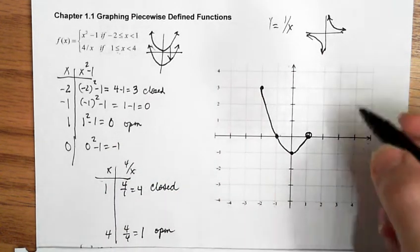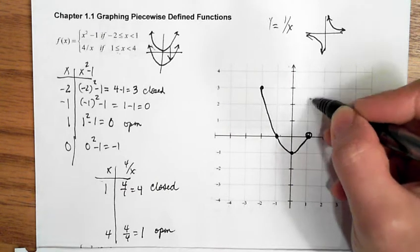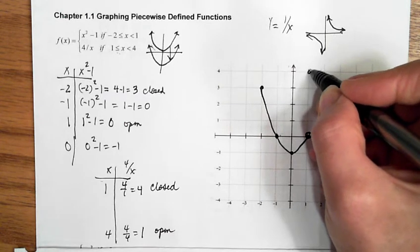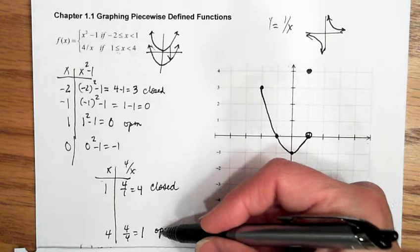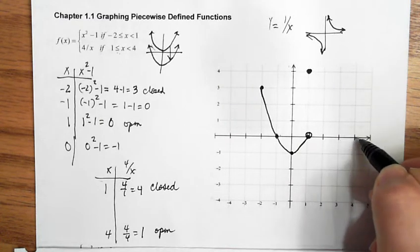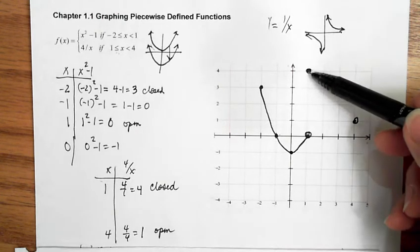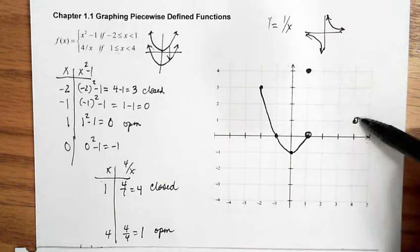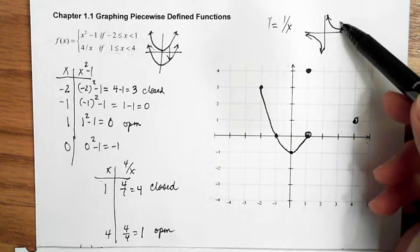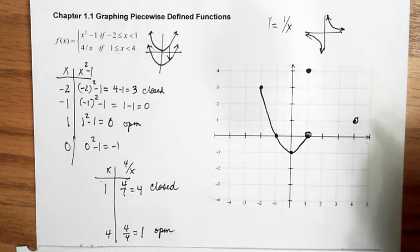We'll start at (1, 4), which is closed — go out 1 and up 4 units. Then at (4, 1), open endpoint. We're expecting a slight curve like the hyperbola parent function, but the spread is too large, so we need some points in between.